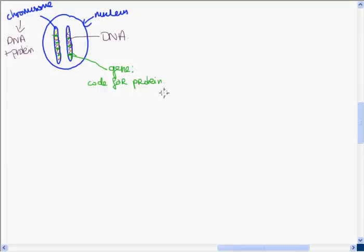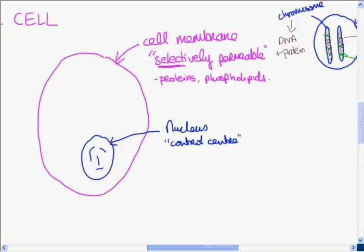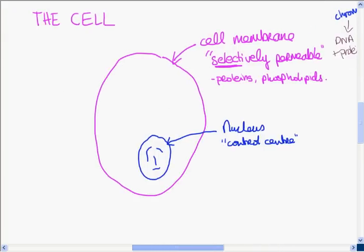Therefore, inside the nucleus we have the genetic information. The nucleus is called the control center because it has the genetic information, the genes control what happens in the cell.